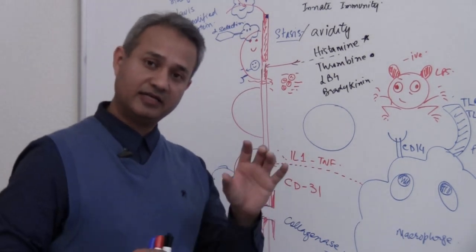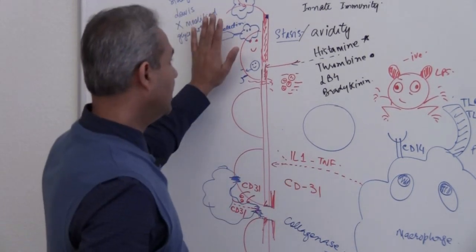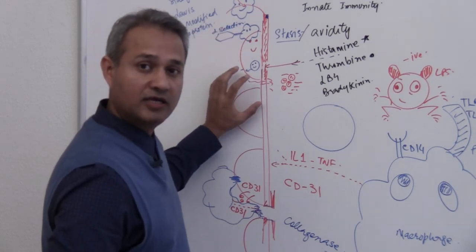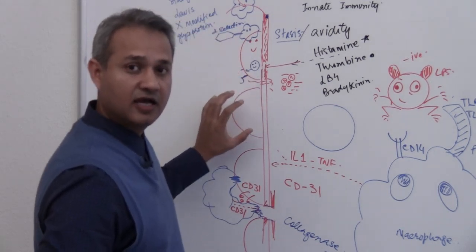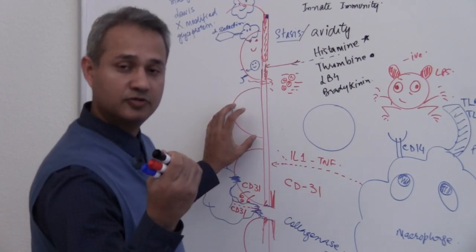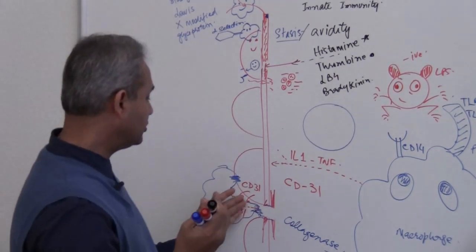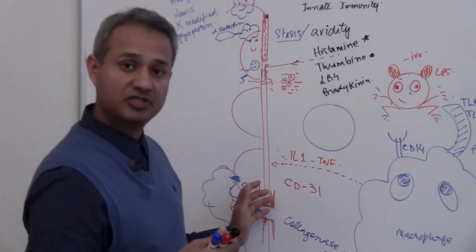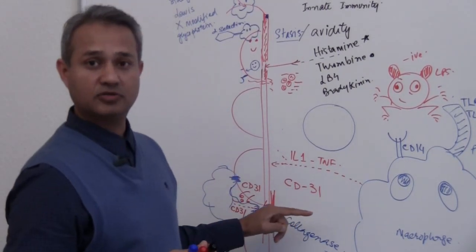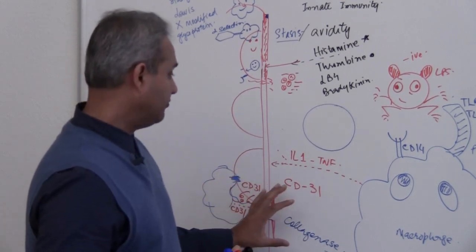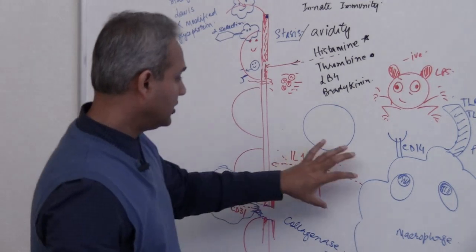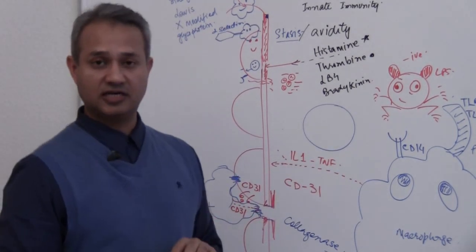In this lecture we talked about how margination occurred, how rolling occurred using selectins, how we reduced and finally held the neutrophil using integrins, and how the neutrophil does transmigration using CD31 and collagenase to break down the tissue. In our next part of the lecture, we will continue with the neutrophil inside the tissue performing its role.